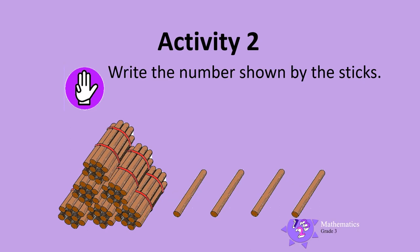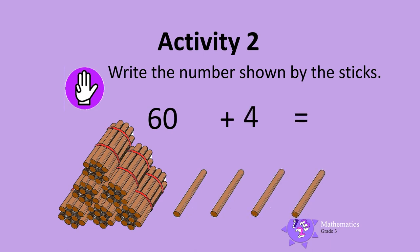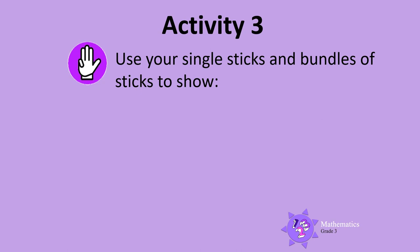Activity 2. Write the number shown by the sticks. There are 10 sticks in each bundle, so let's count the bundles first: 10, 20, 30, 40, 50, 60. Now count the single sticks: 1, 2, 3, 4. 60 add 4 is 64. That's it!